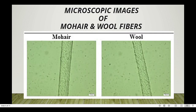Looking at microscopic images: in the mohair fiber, the microscopic view shows dots or beads, while in the case of wool fiber the microscopic view shows slightly irregular cracks. You can see little cracks in the wool fiber — this is a key microscopic difference between the two.